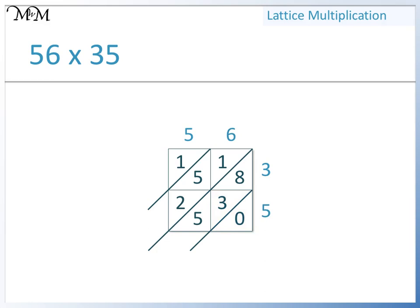Now we'll add the digits in the diagonals. Here we have 0. 5 plus 3 equals 8, and 8 plus 8 equals 16. Because we have a two-digit number, we write the 6 here and carry the 1 into the next diagonal. Next, we have 2 plus 5, which equals 7, plus 1 equals 8, and plus the 1 that we carried equals 9. In this diagonal we have 1. The digits are 1, 9, 6, 0. So 56 times 35 equals 1,960.